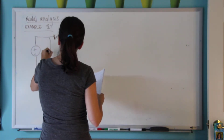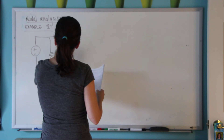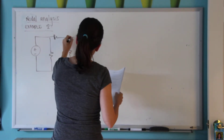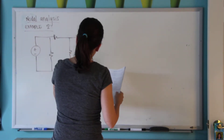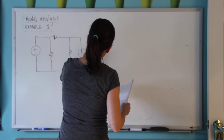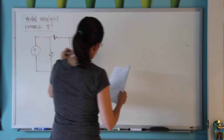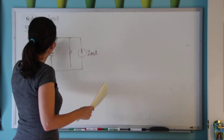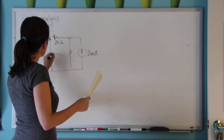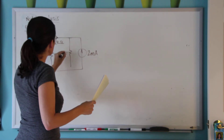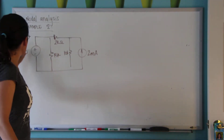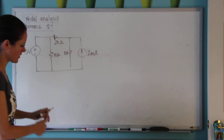So again, in this question we want to find the two voltages. We have a 2 mA current source, a 2 kΩ resistor, a 15 kΩ resistor, a 10 kΩ resistor, and a 5 volt voltage source on the left.